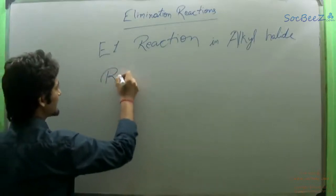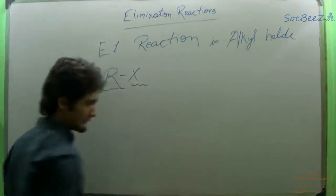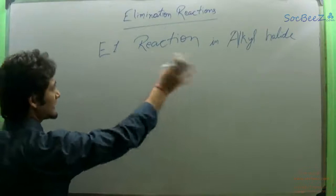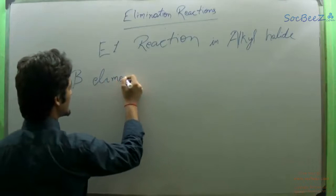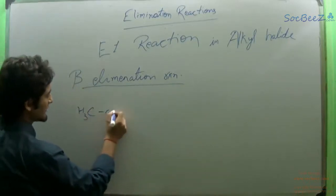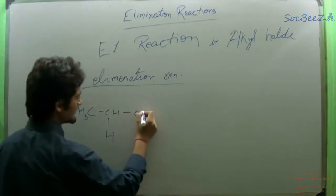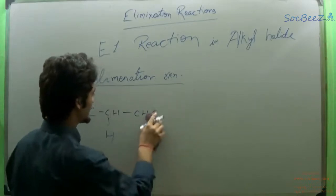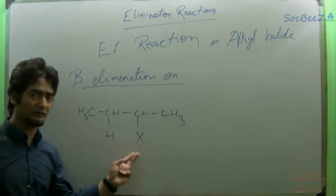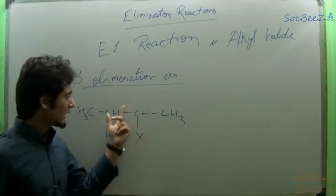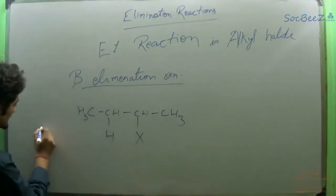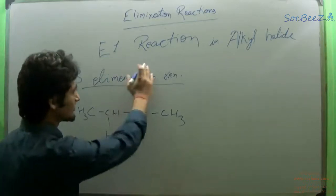Alkyl halide can be represented by RX, where R is a hydrocarbon group and X is a halide. Since it is an alkyl halide, it will undergo beta elimination. In the first step, this X will be eliminated from the molecule and a carbocation is formed, which is a 2° carbocation. For E1 elimination, it is very important that the molecule is at least 2°. A 1° molecule will not go through the E1 mechanism.